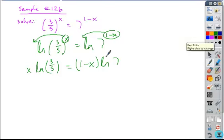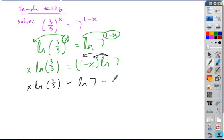I want to move all my terms that contain the variable to one side and solve this equation. So my left side can stay just as it is. My right side, I'm going to distribute the ln of 7. And when I do, I wind up with a second term that contains my variable. So all of these terms need to be on the same side of the equation, so I'm going to move it to the left.